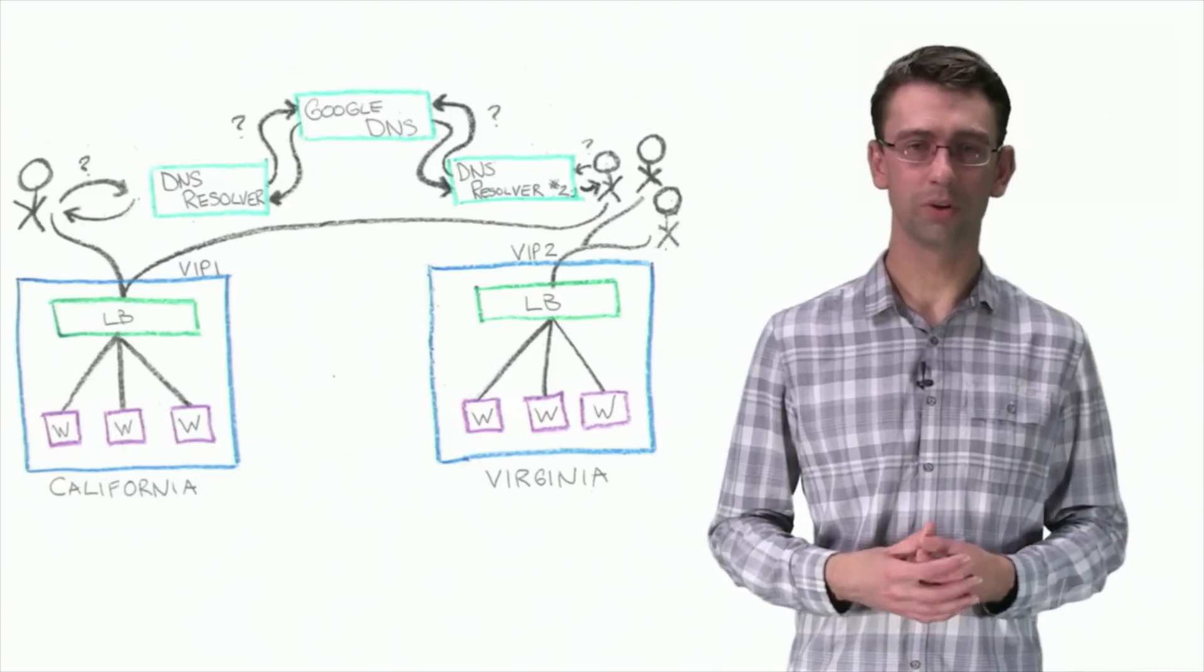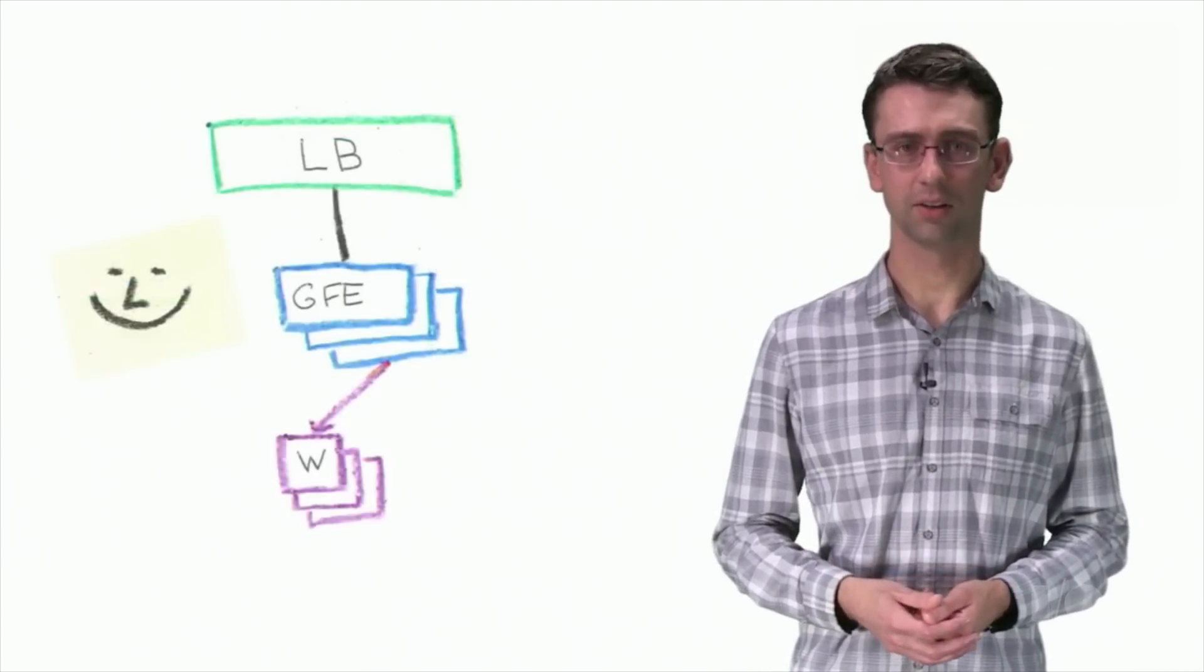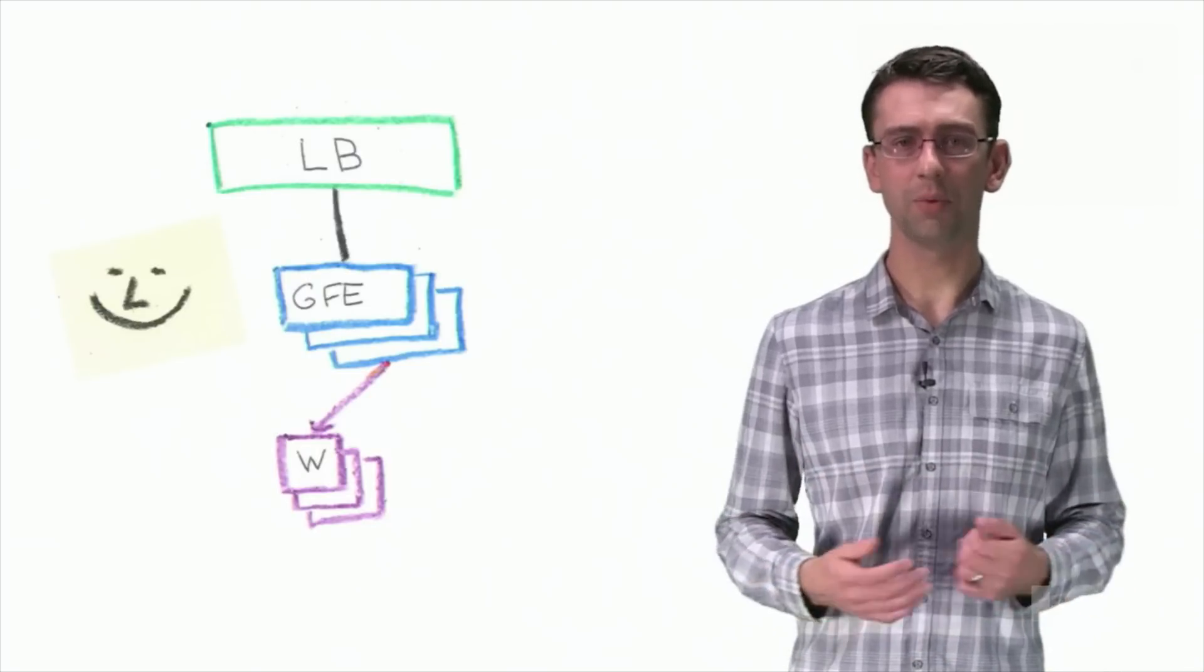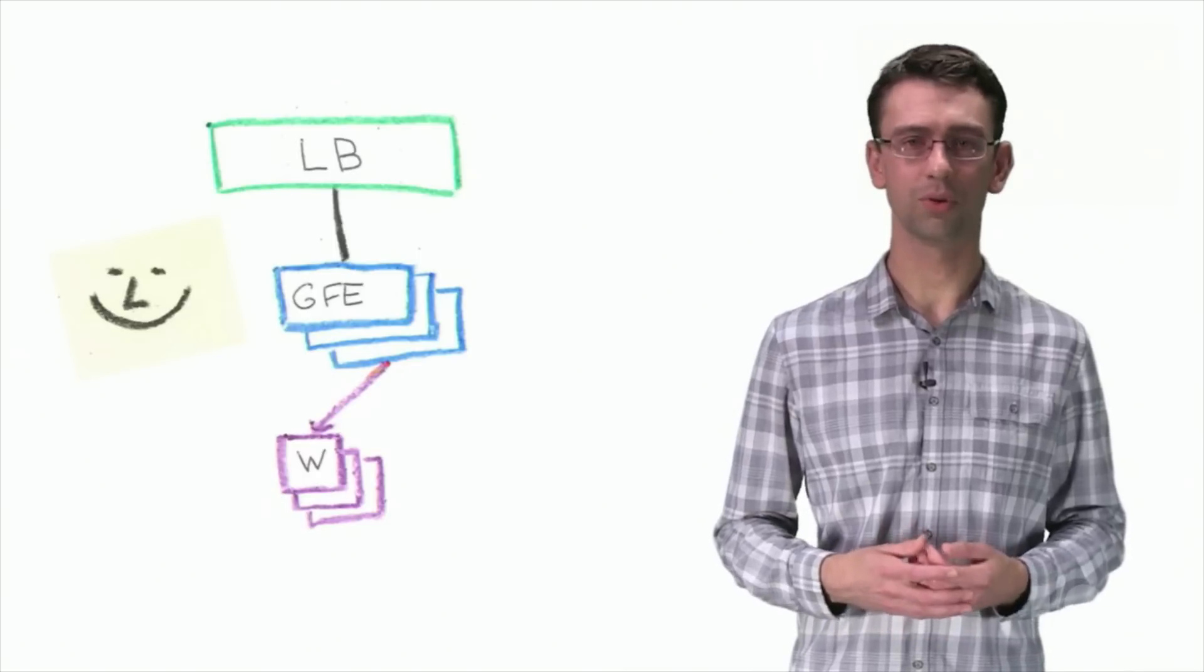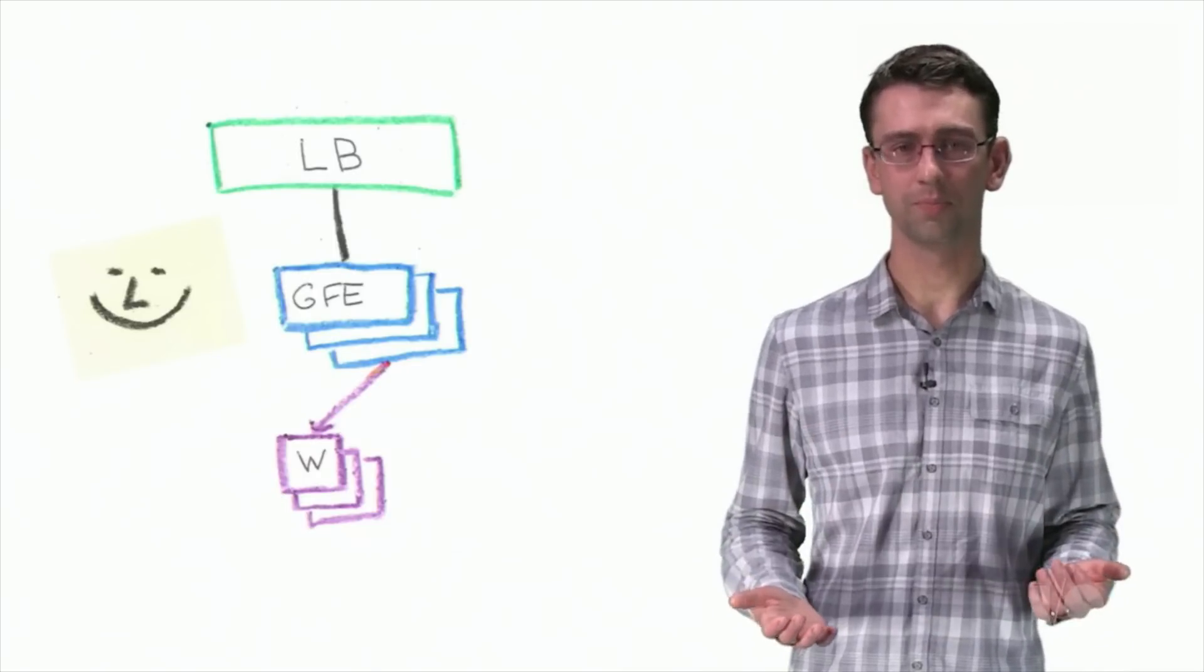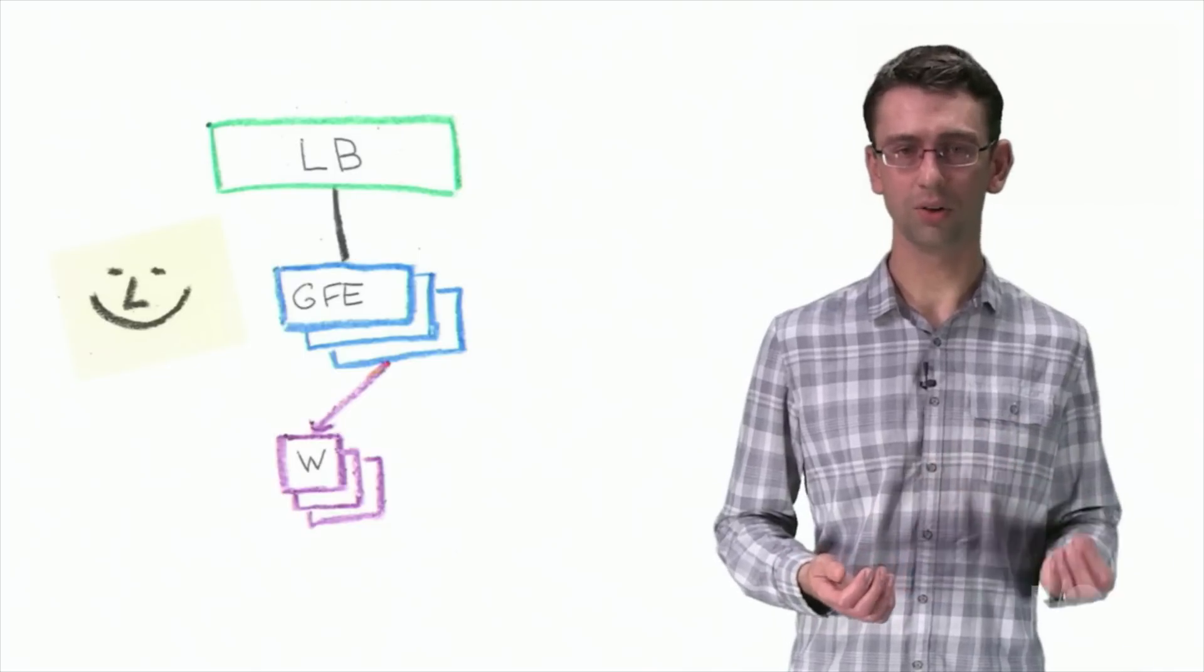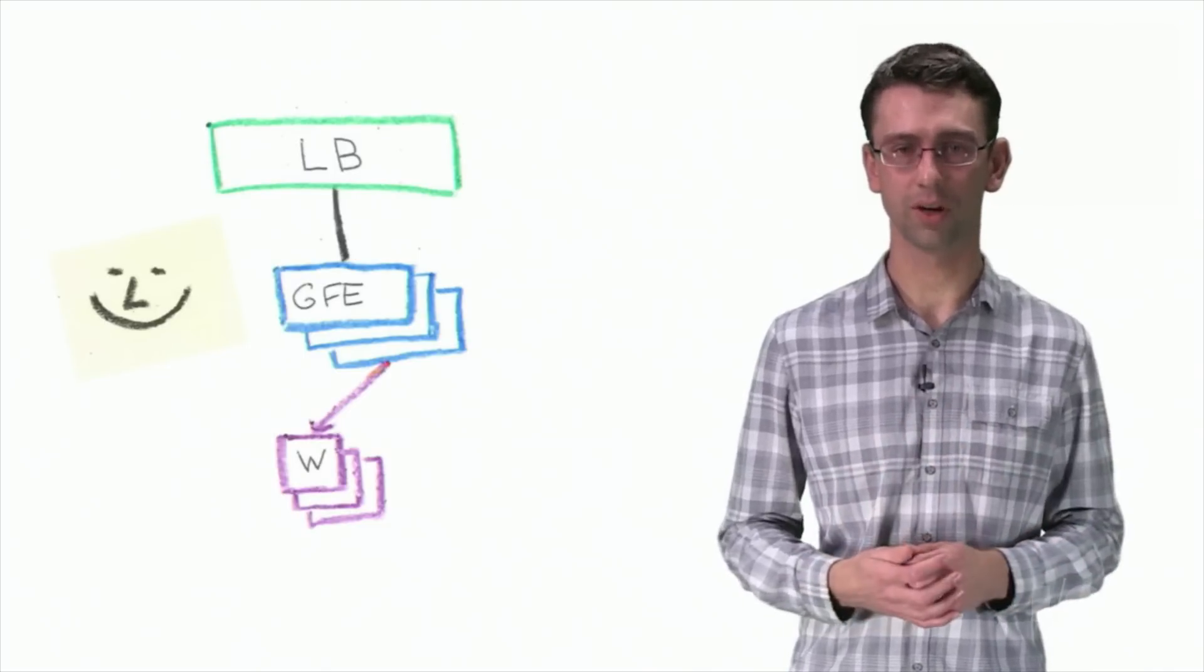At Google, we refer to this method of balancing requests using DNS as front-end load balancing. By this time, Google was offering more products than just web search, and we needed a way to direct requests based on their URL. We introduced a new system called the Google front-end, or GFE. The GFE accepts the client's TCP connection and inspects the host header and URL path to determine which back-end service should handle the request.